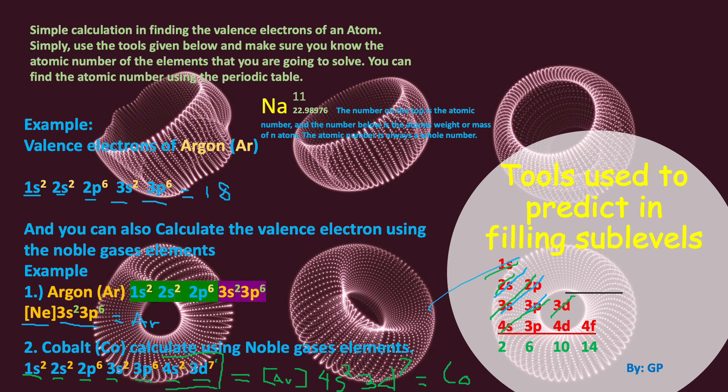This is the method for finding valence electrons using noble gas elements, and this is the other way of calculating valence electrons without using noble gas elements. Thank you for watching — please subscribe to my channel.